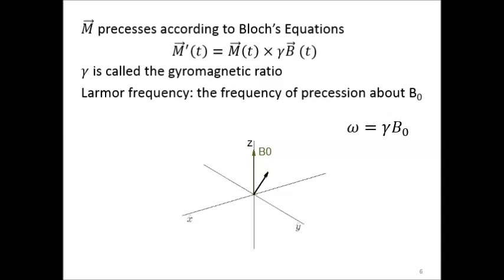The frequency of precession, called the Larmor frequency, is equal to gamma times B0. It's equal to the gyromagnetic ratio, a physical parameter, times the magnitude of the external magnetic field. For hydrogen, gamma is equal to about 42.5 MHz per Tesla.